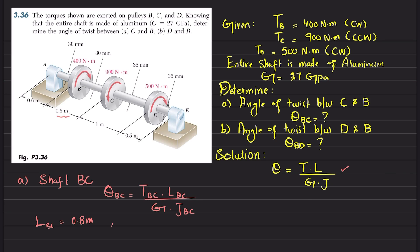Now, what about T_BC? If we cut the shaft in section BC, we have a clockwise torque at B. By equilibrium, T_BC will be equal to 400 Newton-meters, and it is clockwise.